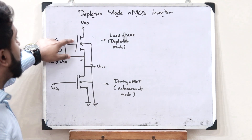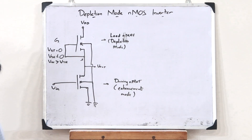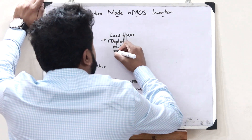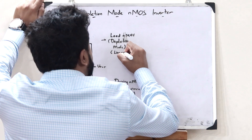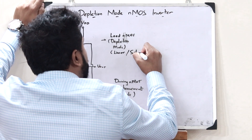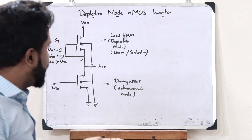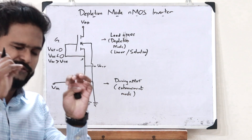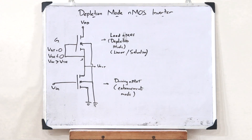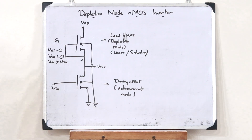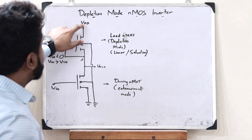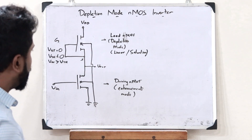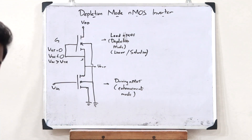Because of this, this particular transistor will always be in the on condition. So therefore, this acts as a non-linear resistor, which means that this can either be in the linear region or it can be in the saturation region. If it is in the linear region, that means that it has got some amount of resistance. But if it is in the saturation region, it means that it has no resistance whatsoever. This is a simple circuit diagram of a depletion mode NMOS inverter. This acts as a non-linear resistor, so there is some kind of a load acting over here. This acts as a switch.